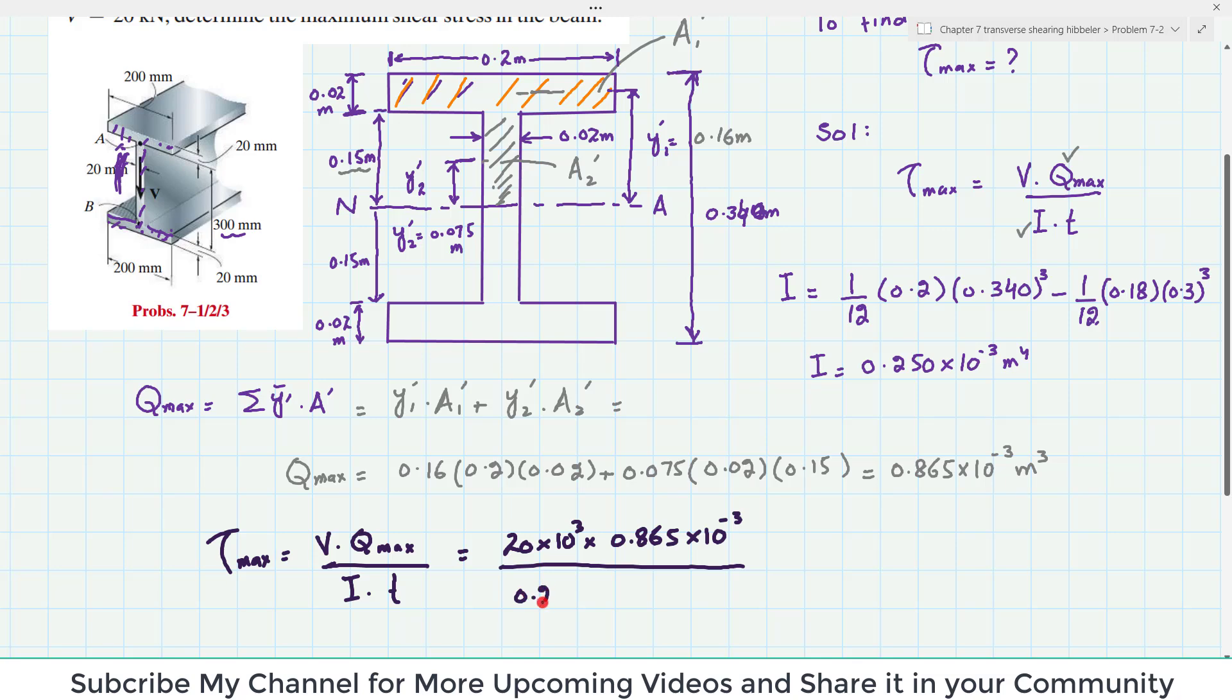Q max is 0.865 into 10 to power minus 3 divided by I is the moment of inertia, second moment of inertia of whole cross section which is 0.25 into 10 to power minus 3 and T is the thickness which you can see here is 0.02.